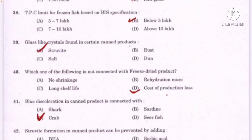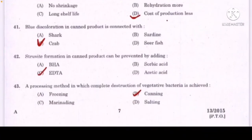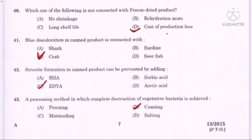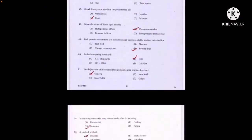Which one of the following is not connected with freeze-dried products — correct answer option D: cost of production less. Blue discoloration in canned products is connected with — correct answer option C: crab. Struvite formation in canned products can be prevented by adding — correct answer option C: EDTA. A processing method in which complete destruction of vegetative bacteria is achieved — correct answer option D: canning.